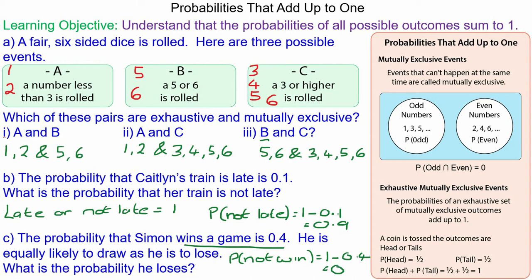So if he wins with probability 0.4, then not winning is 0.6, and because it is equally likely that he could draw or lose, 0.6 divided by 2, which would be 0.3, would be the probability of him losing.